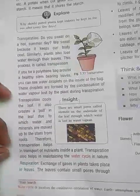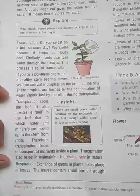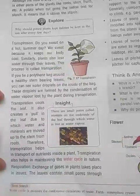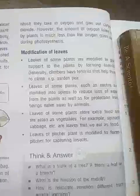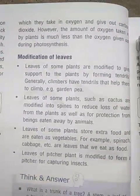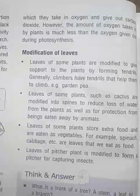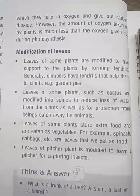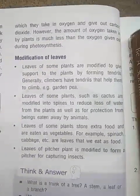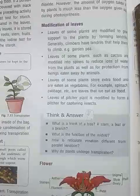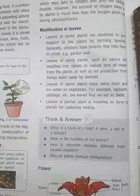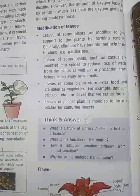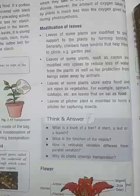Transpiration also helps in maintaining the water cycle in nature. The exchange of gases in plants takes place in the leaves. The leaves contain small pores through which they take in oxygen and give out carbon dioxide gas. However, the amount of oxygen taken in by the plants during respiration is much less than the oxygen given out during photosynthesis.